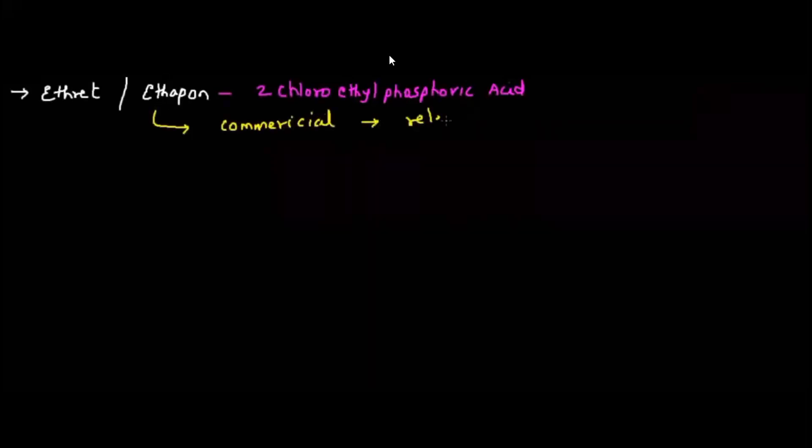Ethephon or ethypon is the commercial name for ethylene which is available in the market. Chemically it is 2-chloro ethyl phosphoric acid.